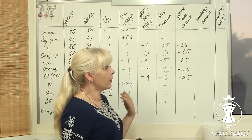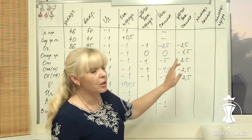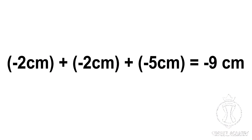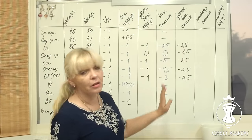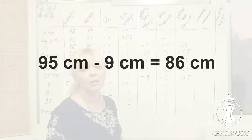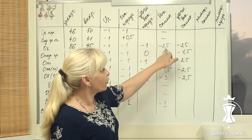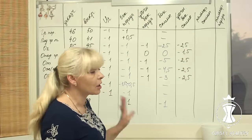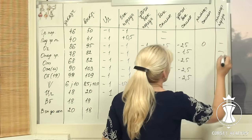Starting from the bust circumference: it is 86 cm on the client and 95 cm on the pattern. Negative 2 cm plus negative 2 cm plus negative 5 cm equals negative 9 cm. I subtract this value from the pattern measurement: 95 cm minus 9 cm equals 86 cm. I have arrived at my client's measurement, meaning I don't need to alter the back princess seam at the bust line level. I write 0 in line 3 of column 8.